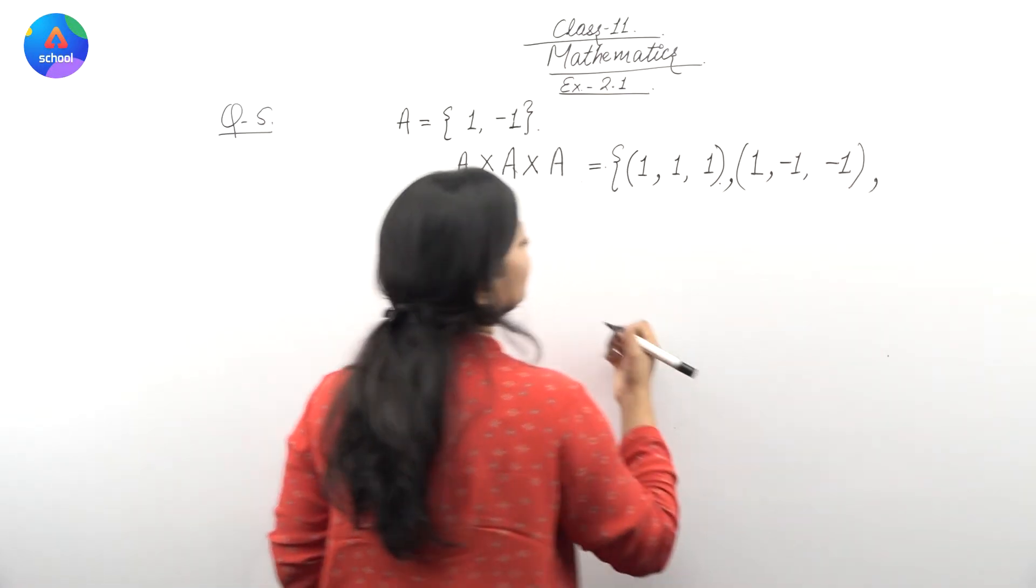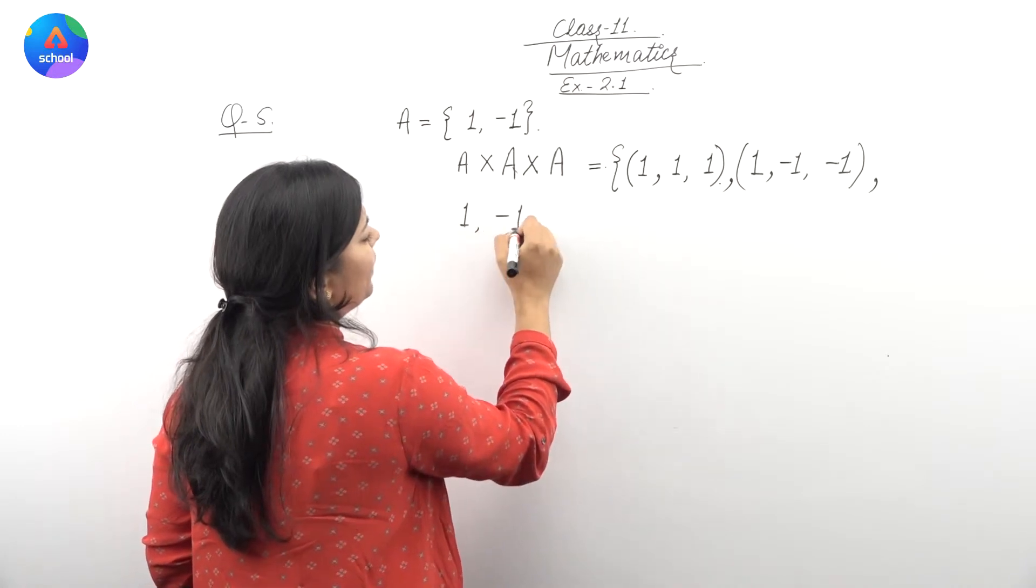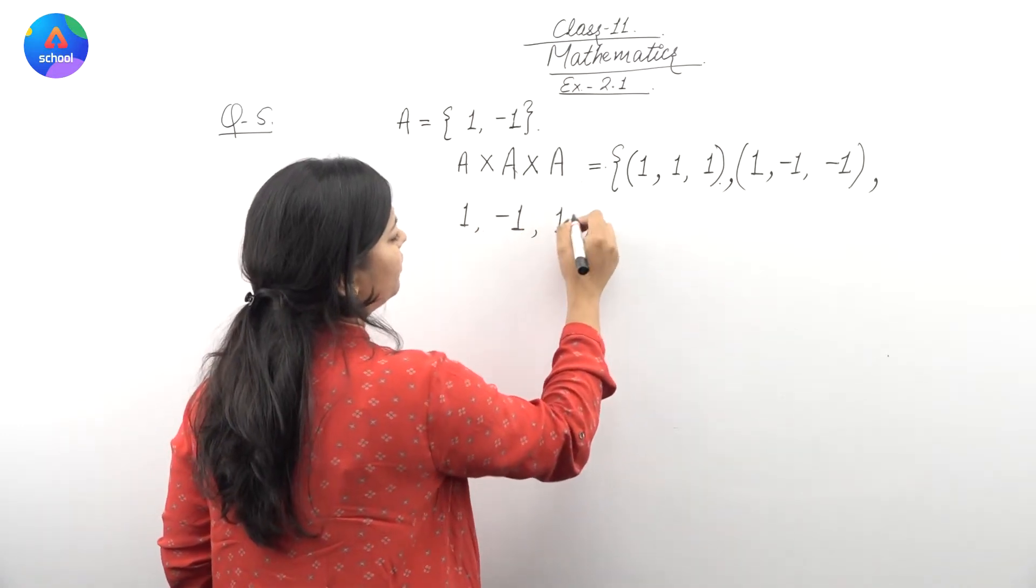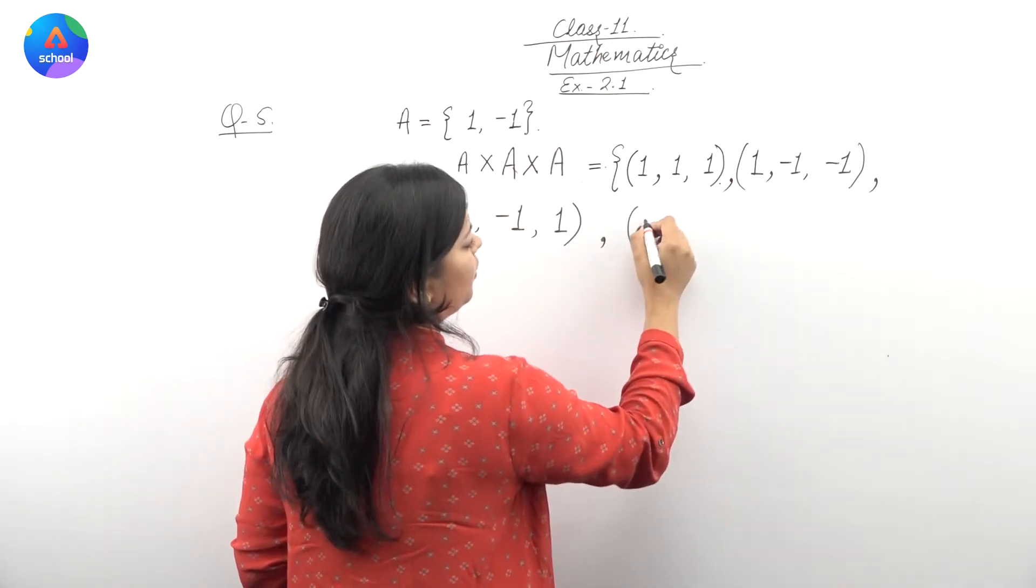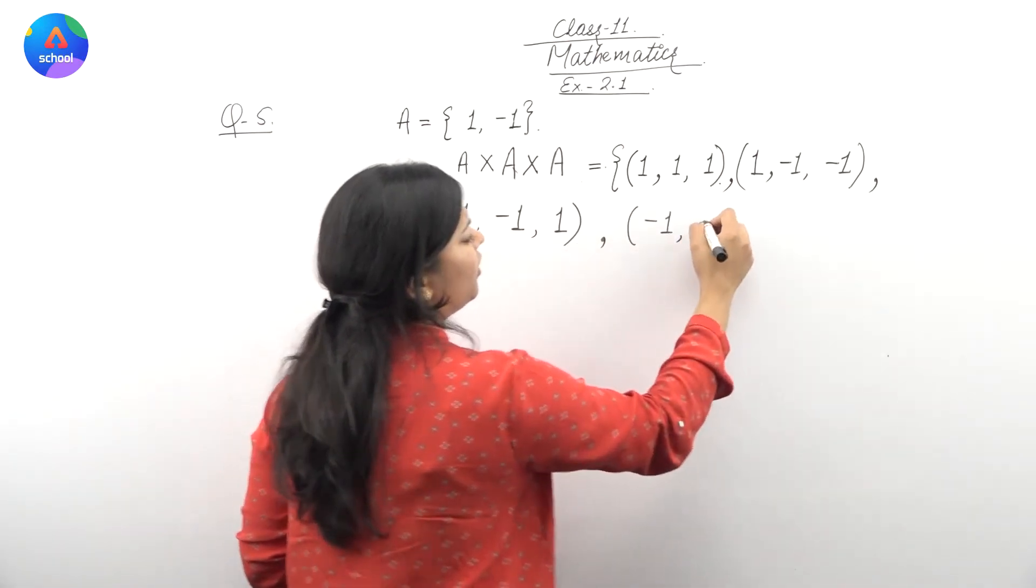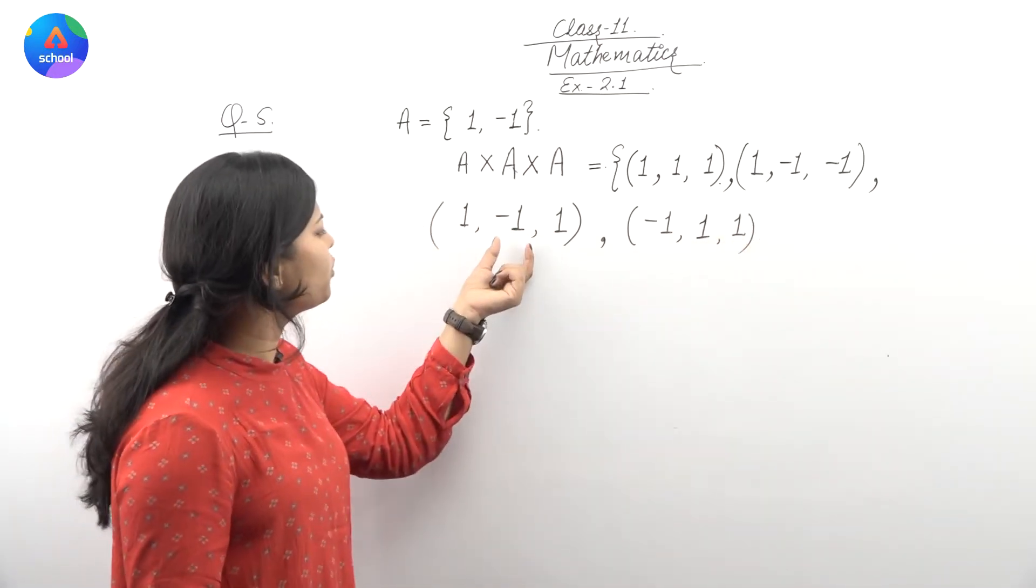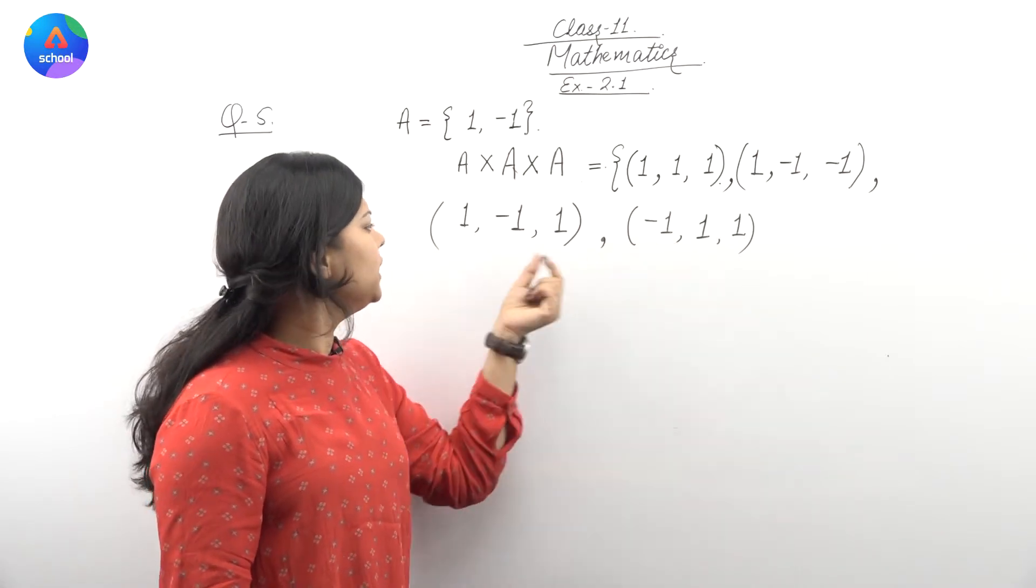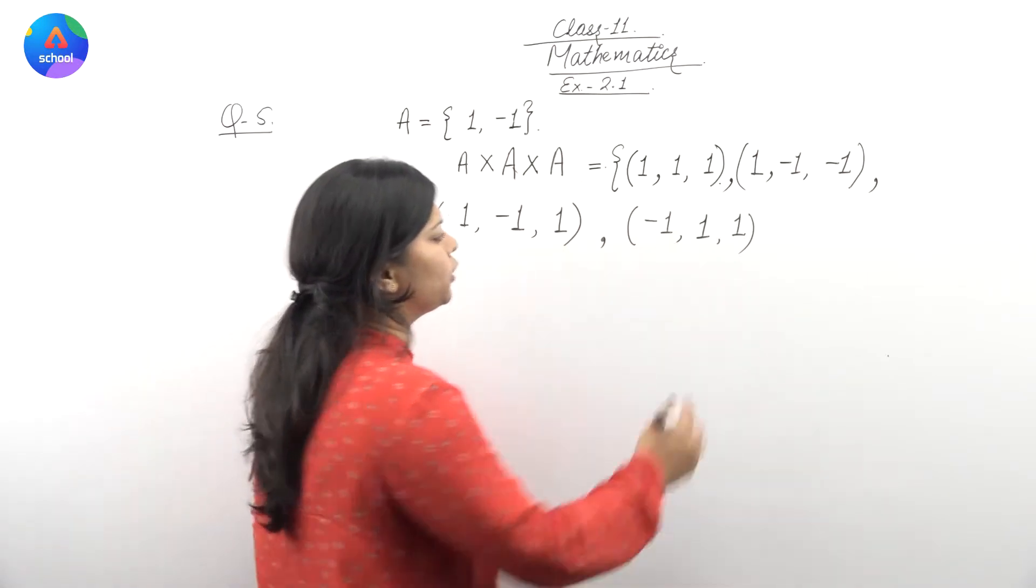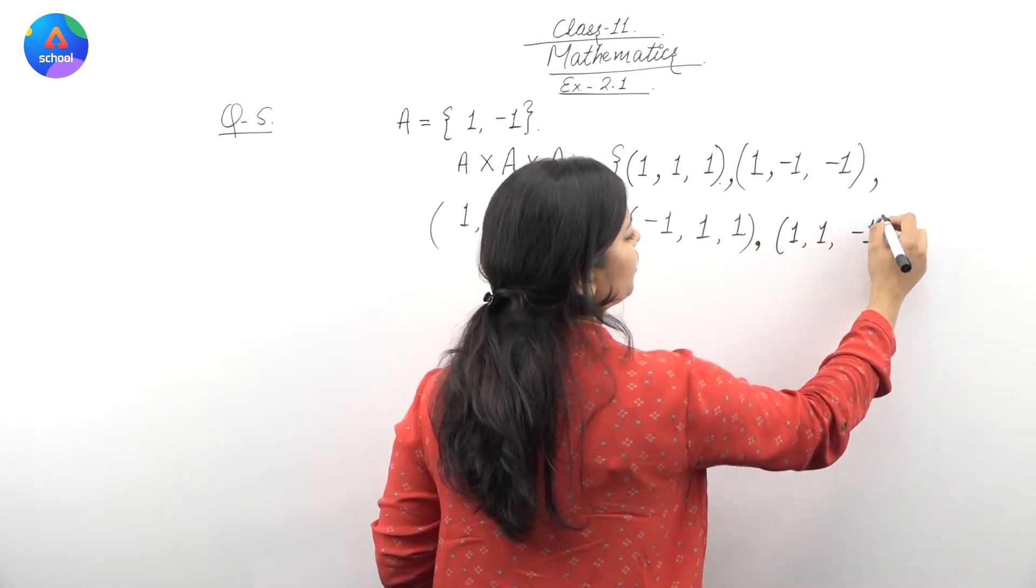Uske baad, next is, mai yaha paas, likhi hun elements, one, minus one, and one. Uske baad, minus one, one, and one. Mai ne kya kiya, minus one yaha paas liya. Ab mai ne iska jo place, woh change kar diya, third time, mai ne minus one yaha lehleti ho. One, one, and minus one.